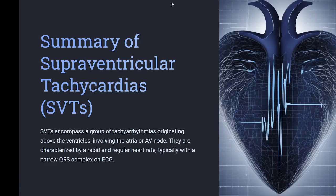Summary of Supraventricular Tachycardias. SVTs encompass a group of tachyarrhythmias originating above the ventricles, involving the atria or AV node. They are characterized by a rapid and regular heart rate, typically with a narrow QRS complex on ECG.